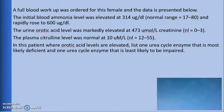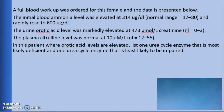A full blood workup was ordered for this female, and the data is presented below. The initial blood ammonia level was elevated at 314 micrograms per deciliter, with a normal range of 17 to 80, and rapidly rose to 600 micrograms per deciliter. The urine orotic acid level was markedly elevated at 473 micromoles per liter creatinine, with a normal level of 0 to 3. The plasma citrulline level was normal at 10 micromoles per liter, with a normal level of 12 to 55. In this patient, where orotic acid levels are elevated, list one urea cycle enzyme that is most likely deficient, and one urea cycle enzyme that is least likely to be impaired.